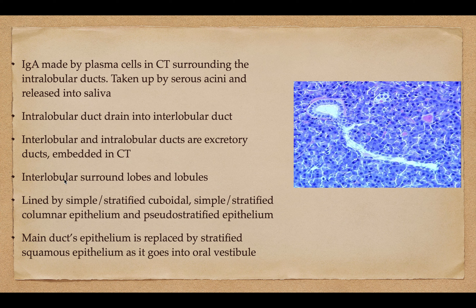The interlobular ducts surround the lobes and lobules; intra- means inside. These are lined by either simple or stratified cuboidal or columnar epithelium, and also pseudostratified epithelium. The main duct epithelium is replaced by stratified squamous epithelium as it goes into the oral vestibule — so they start with taller cells, then get flatter, and then you get squamous epithelium.